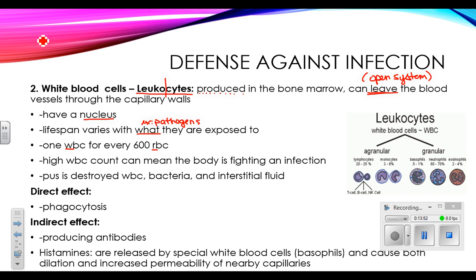The difference in numbers between red and white blood cells is quite vast. A high white blood cell count generally means your body is fighting some kind of infection. One way to medically test if someone has an issue with their blood or an infection is to do a white blood cell count — a term referenced regularly in medical contexts. Pus, interestingly, is actually destroyed white blood cells with a few other things mixed in.